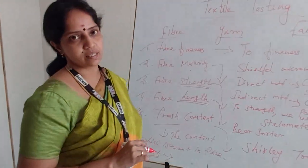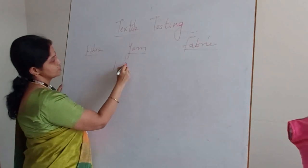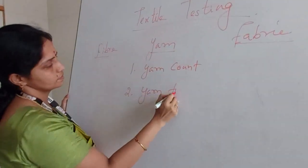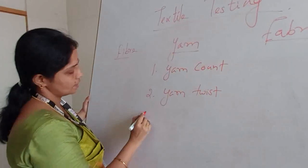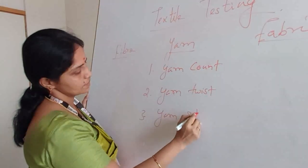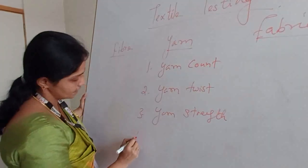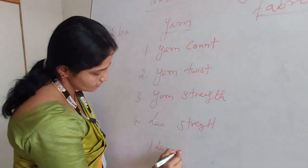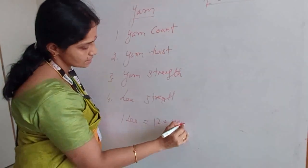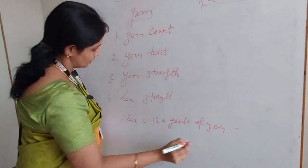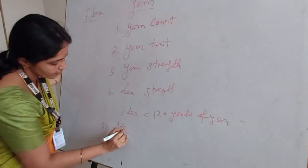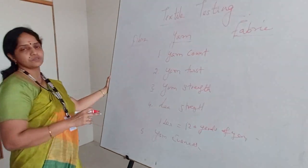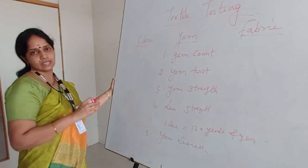Then we move on to yarn testing. The first parameter is yarn count. The next one is yarn twist — that is turns per inch. The third one is yarn strength — the strength of the particular yarn. Then lea strength — one lea is equal to 120 yards of yarn. And the last one is yarn evenness. These are the five parameters which we have to check or test before selecting the yarn.